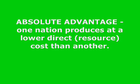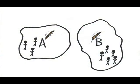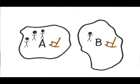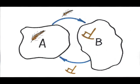So if country A could produce food using less labor than country B, and country B could produce furniture using less labor than country A, then it would be mutually beneficial for the countries to trade with each other.